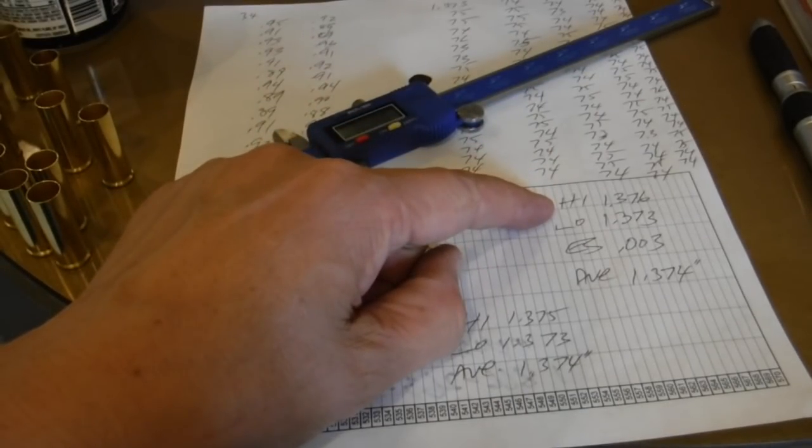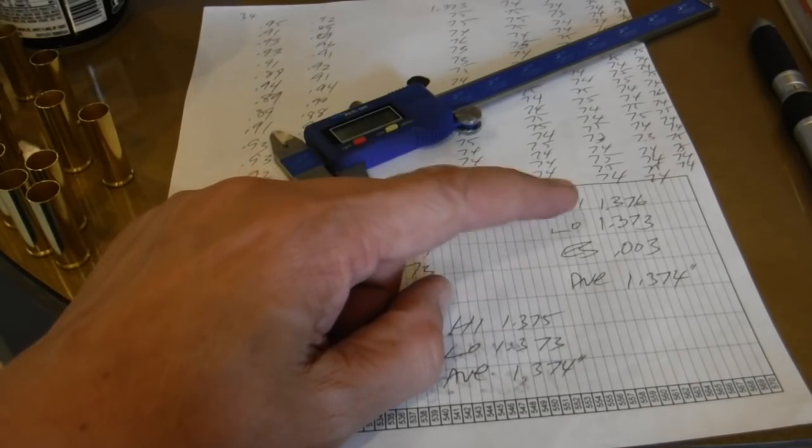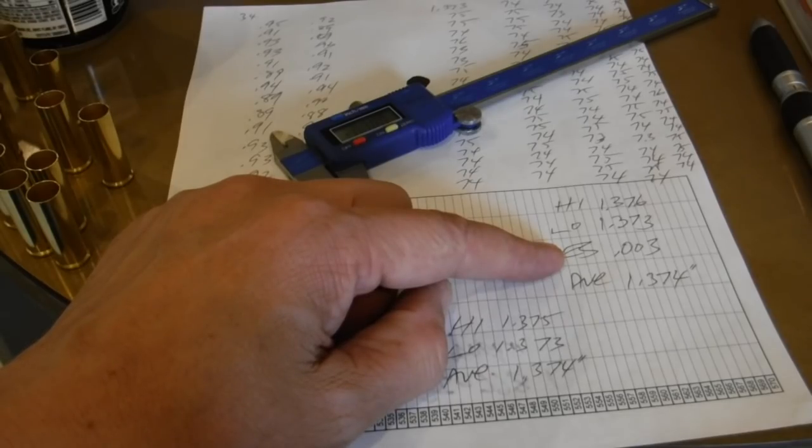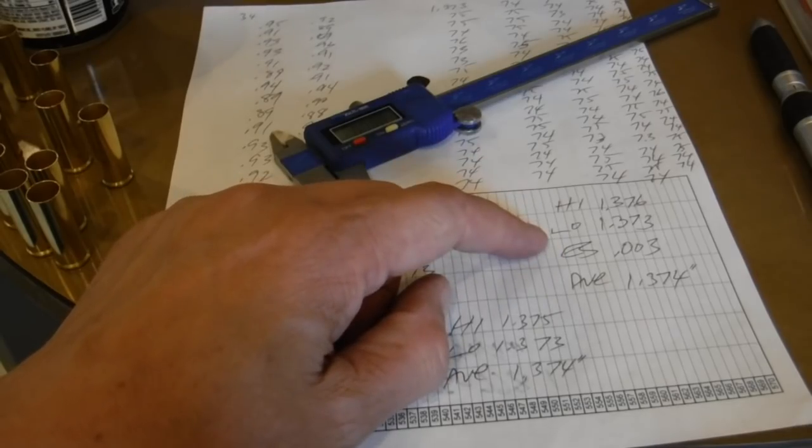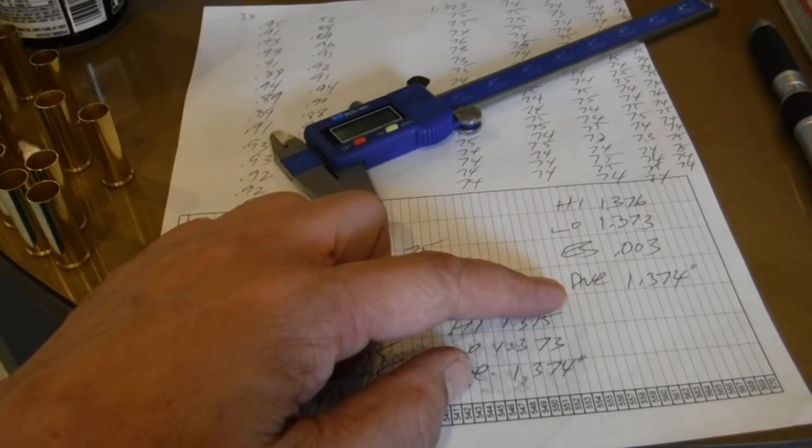you get a high of 1.376, a low of 1.373, so the spread is only 0.003. That's not bad. Could be better, but again, that's not bad. The average is 1.374 inches.